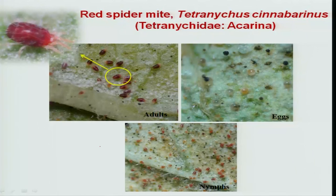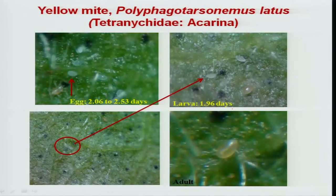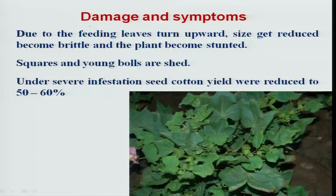Several mite species occur on cotton. Red spider mite occurs at later stages, causing stunted plants with a brittle, faded appearance due to continuous feeding. Yellow mite, which belongs to Tetranychidae, has recently occurred on cotton especially in Karnataka, causing leaves to become brittle and shed at later stages due to continuous de-sapping.